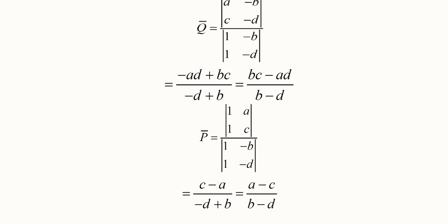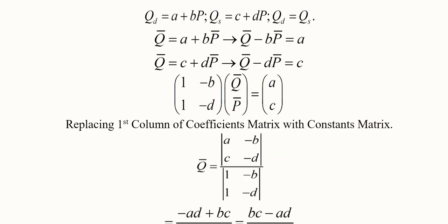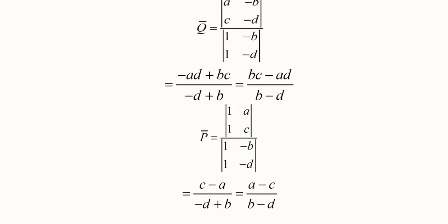For the equilibrium price, we apply a similar procedure, but this time we replace the second column. The entries minus B and minus d are replaced by A and C. The determinant of this replacement matrix divided by the determinant of the original coefficients matrix gives us the numerator and denominator solutions, from which we obtain the equilibrium price.